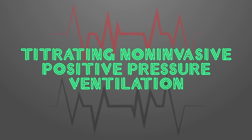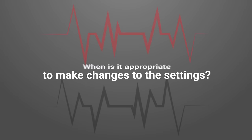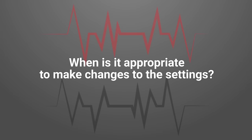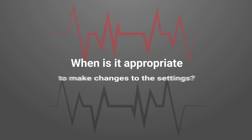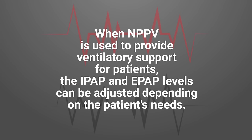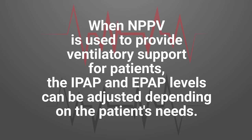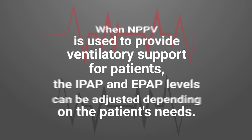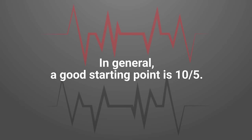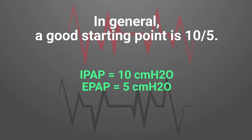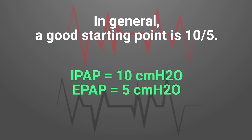The last topic is titrating non-invasive positive pressure ventilation — in other words, when it's appropriate to make changes to the settings. When non-invasive ventilation is used to provide ventilatory support, the IPAP and EPAP levels can be adjusted depending on the patient's needs. A good general starting point is 10 over 5 — an IPAP setting of 10 and an EPAP setting of 5.